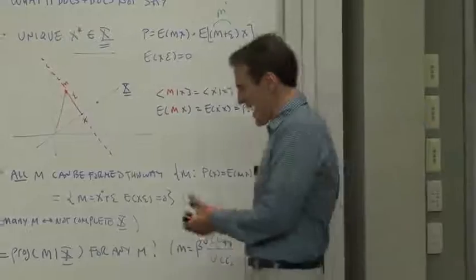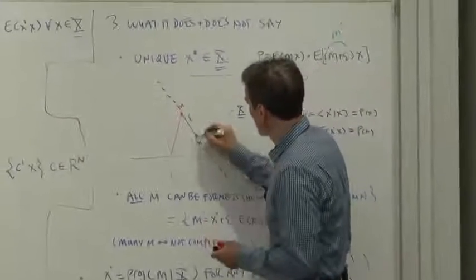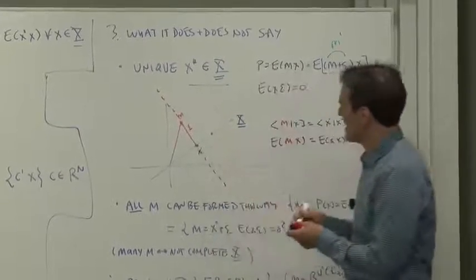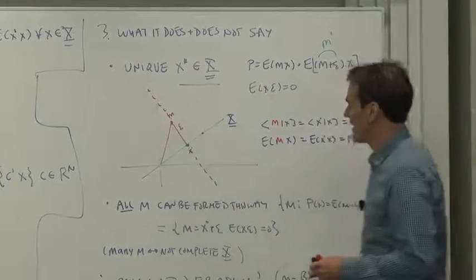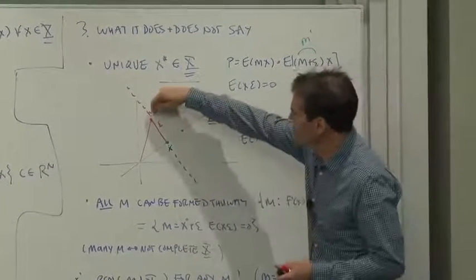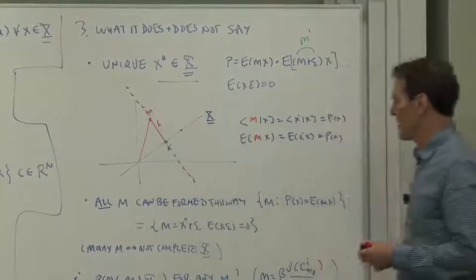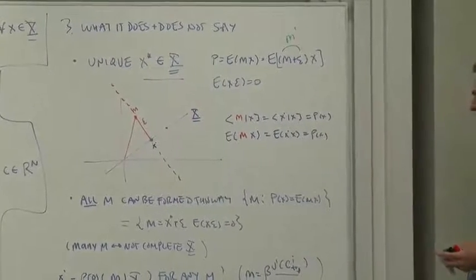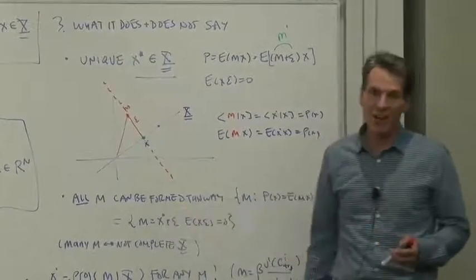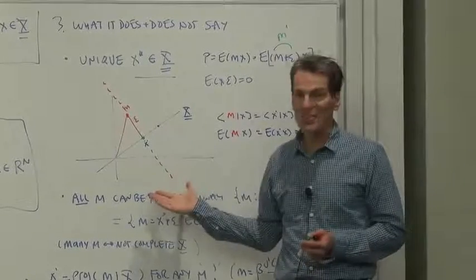Another way of stating the same thing, X star is a very special discount factor because take an arbitrary discount factor like M. Well, X star is the projection of the arbitrary discount factor onto the payoff space. That's a lovely little result and maybe an advertisement for thinking geometrically.